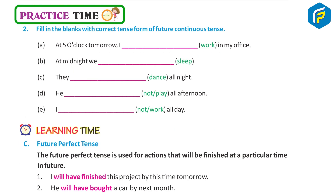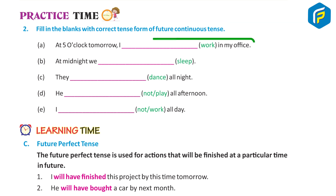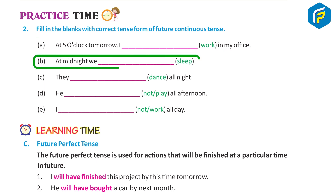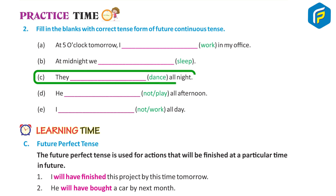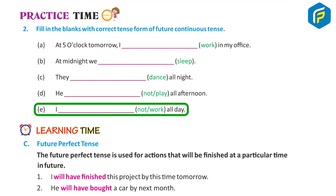Practice Time 2: Fill in the blanks with the correct future continuous tense form. A. At 5 o'clock tomorrow, I will be working in my office. B. At midnight, we will be sleeping. C. They will be dancing all night. D. He will not be playing all afternoon. E. I will not be working all day.